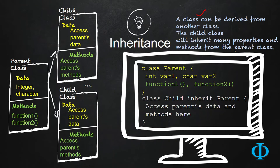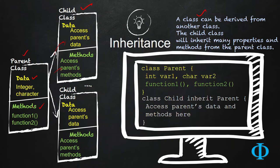In object-oriented programming, the parent class has several data members — like integers or characters — and some methods. The child class can access all the parent's data and all the parent's methods. One parent can have multiple children, and each of those children can access all the data and methods of the parent class. For example, this parent class has integer var1 and character var2 as data, and function1 and function2 as methods.